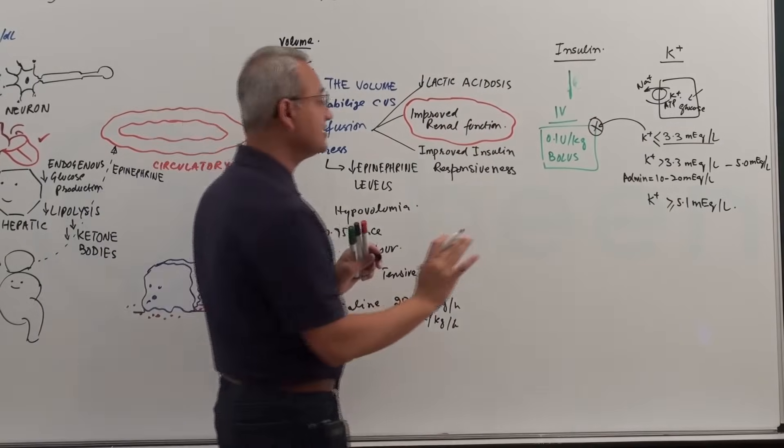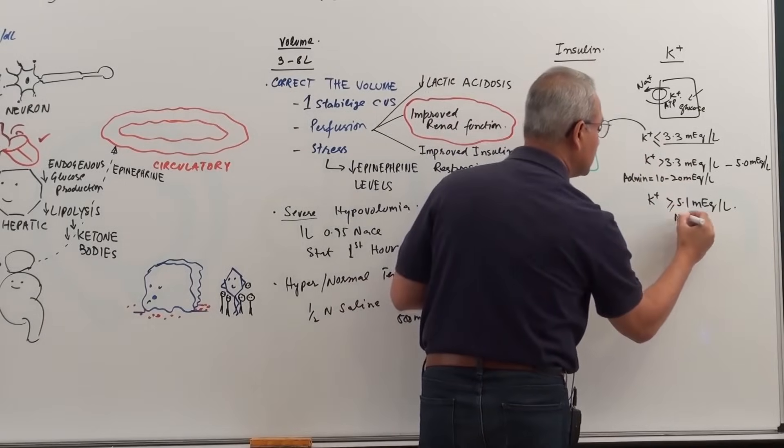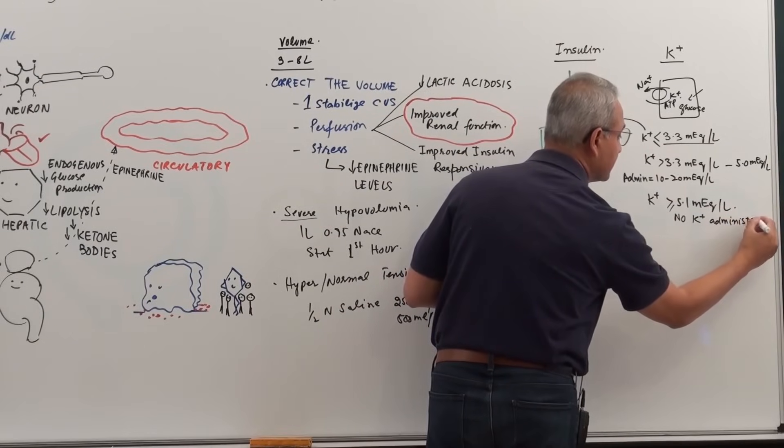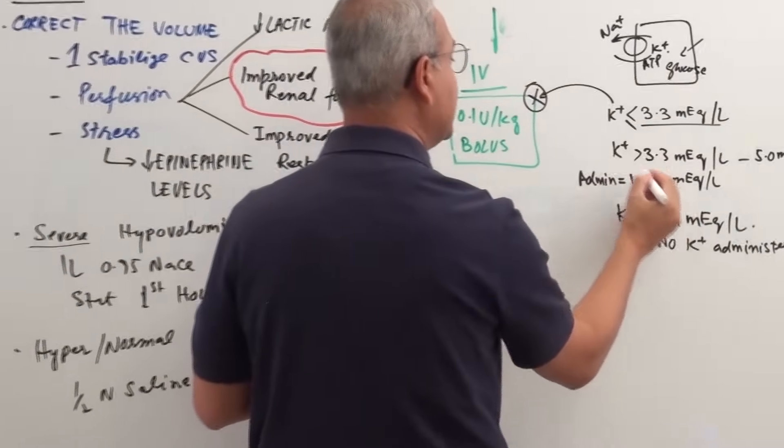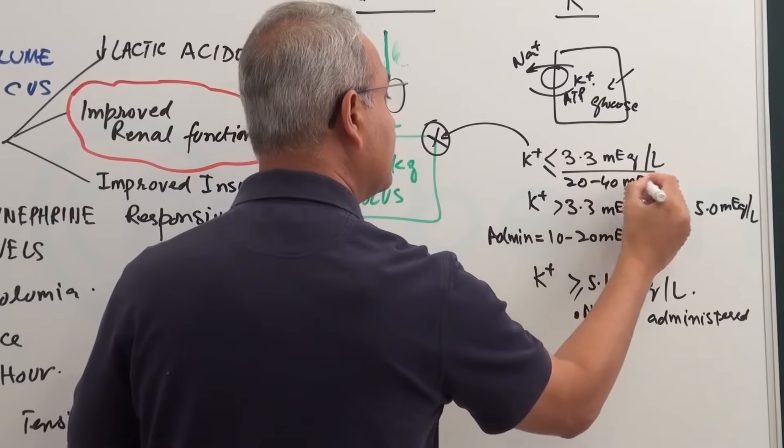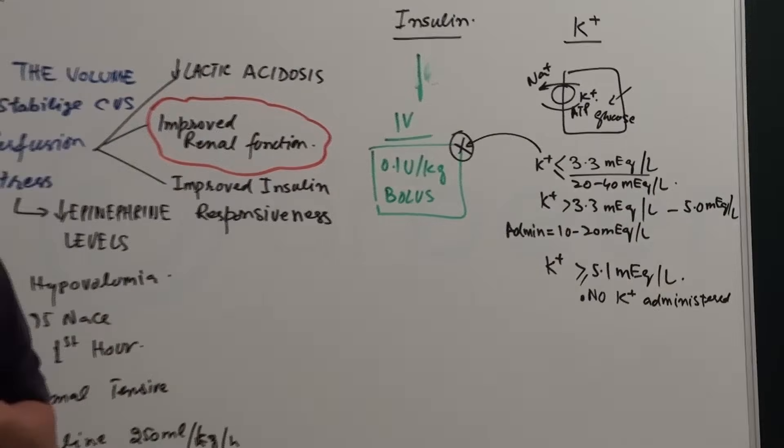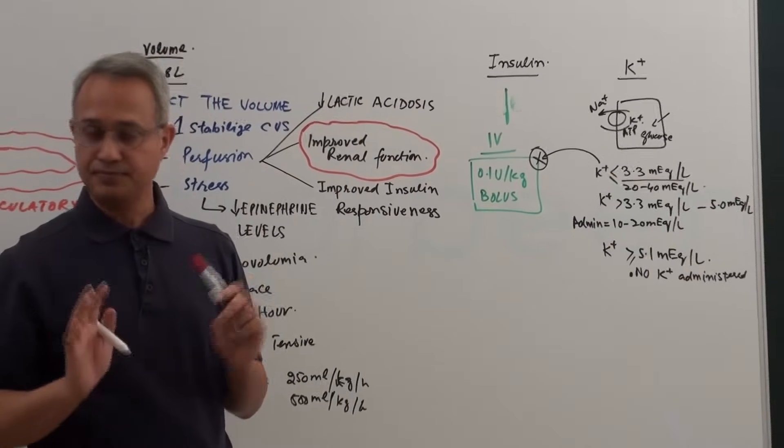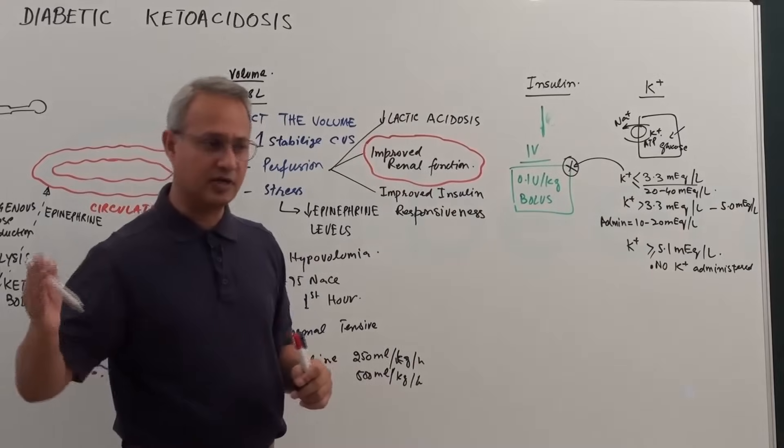Decision making, this is the thing that can stop insulin administration. Here, no potassium administered. Here, administer 10 to 20. Here, first administer 20 to 40 milliequivalents per liter, and then when the levels are between 4 to 5, then you start insulin. Or even if the level reaches greater than 3.3, you start coming into the safe zone.